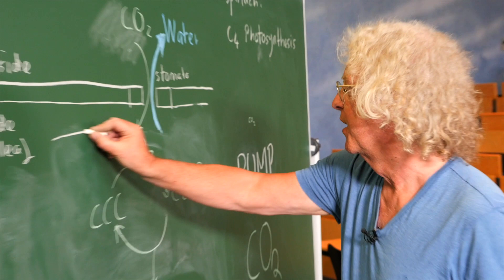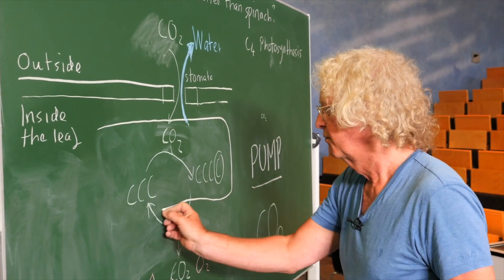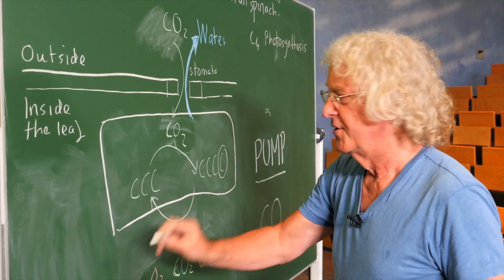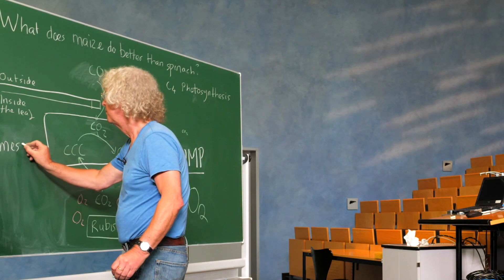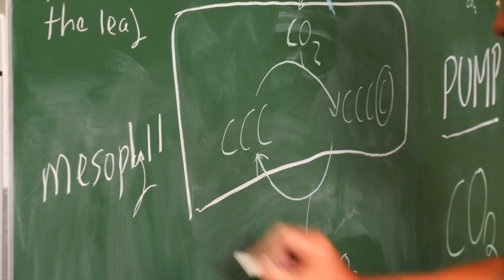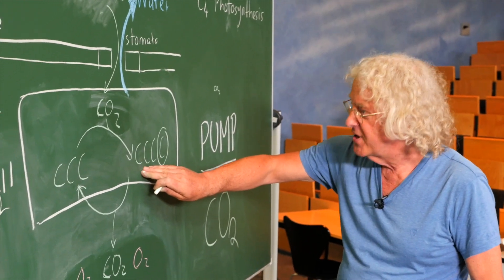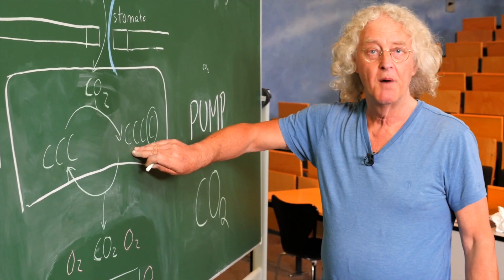In one cell type, which I'm just going to draw now. This cell type is called the mesophyll. The carbon dioxide is incorporated into a four carbon compound.